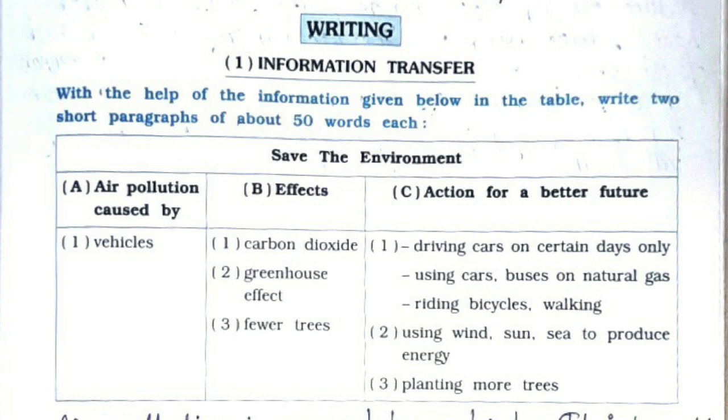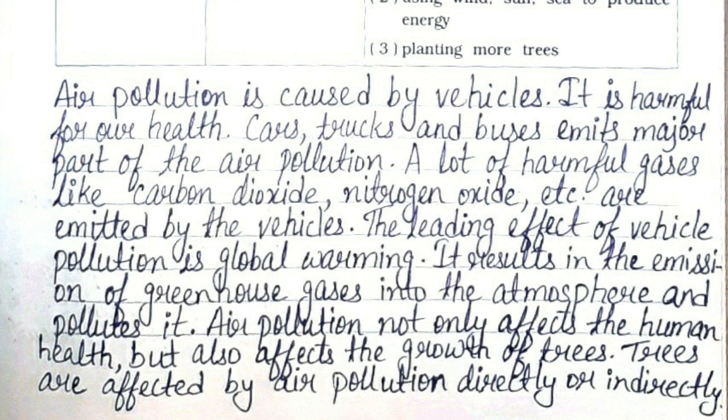Now we will see the writing part. First is information transfer — write two short paragraphs of about 50 words each. Air pollution is caused by vehicles. It is harmful for our health. Cars, trucks, and buses emit a major part of air pollution. A lot of harmful gases like carbon dioxide, nitrogen oxide, etc. are emitted by vehicles. The leading effect of vehicle pollution is global warming. It results in the emission of greenhouse gases into the atmosphere and pollutes it. Air pollution not only affects human health but also affects the growth of trees, directly or indirectly.